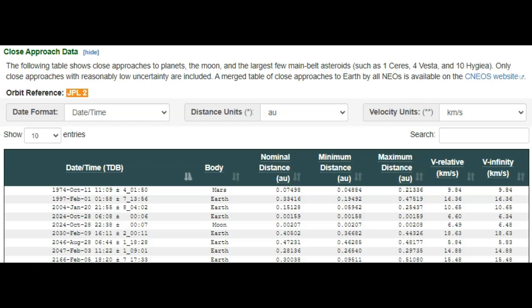All right, looking at the close approach data, they've been able to extrapolate about one page of flybys here, both past and present, from the 40 observations. Go to the 28th here. Looks like it's going to fly by at about 608 UTC time, so that's going to be right around, again, 1 a.m. in the morning.